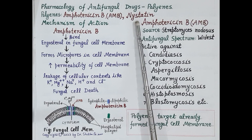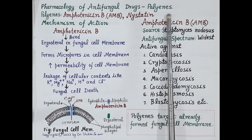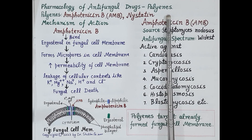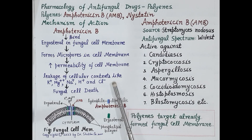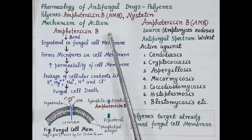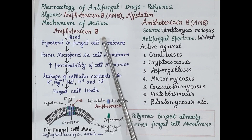Amphotericin B and nystatin are polyenes. They both produce antifungal effect by the same mechanism of action. So let's understand the mechanism of action of amphotericin B.